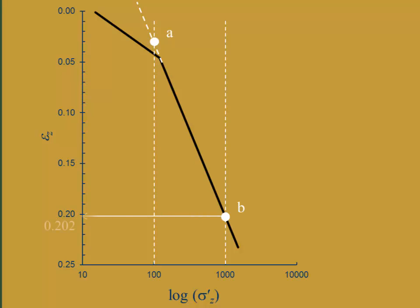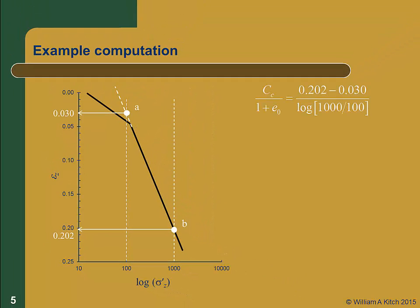At B, the strain is 0.202, and at A it's 0.030. The compression ratio is then 0.202 minus 0.030, divided by the log of 1000 over 100, which is the log of 10, which equals 1. So the compression ratio is simply 0.202 minus 0.030, or 0.172. This is the trick: if you compute the slope using points that are one log cycle apart, the slope will simply be the difference between the two strain values.